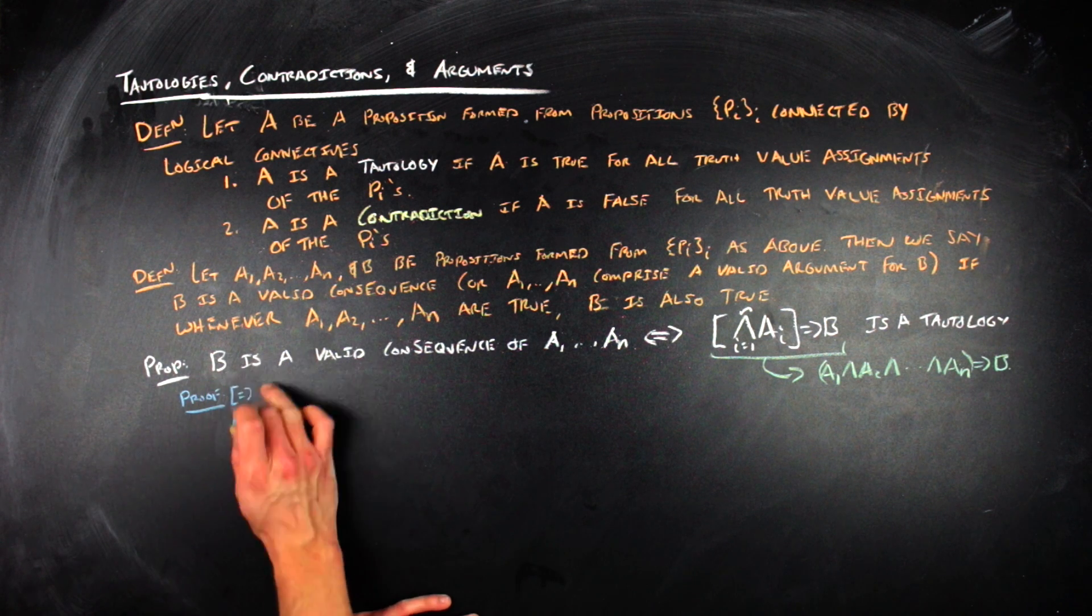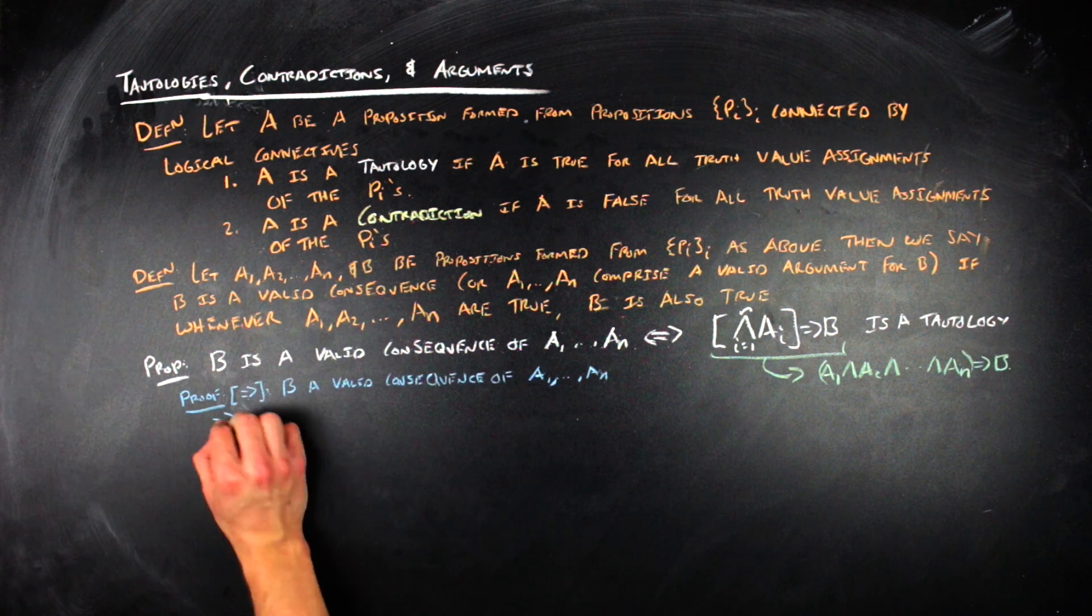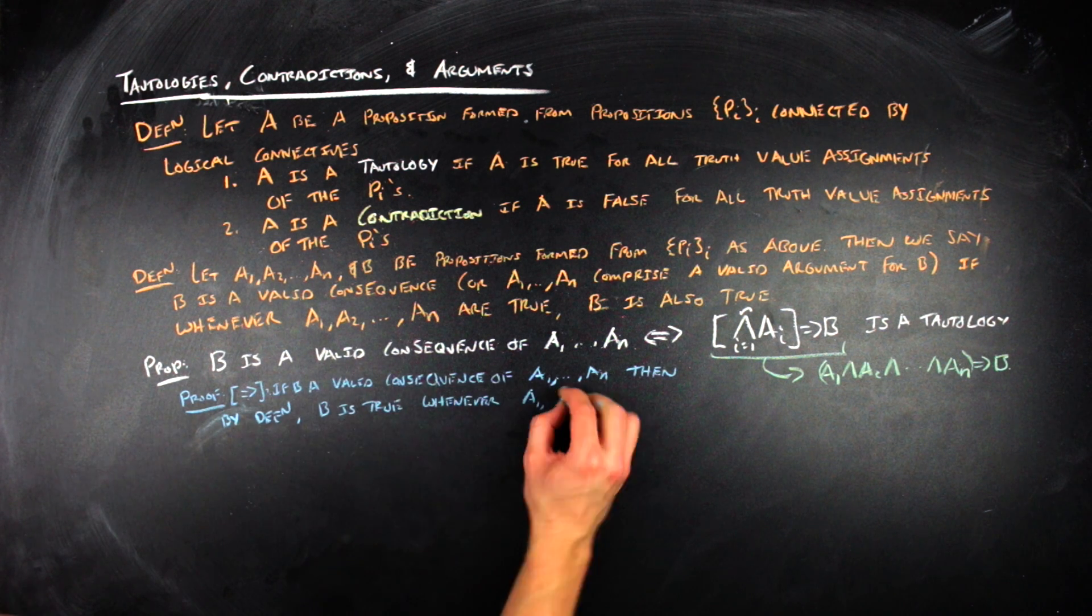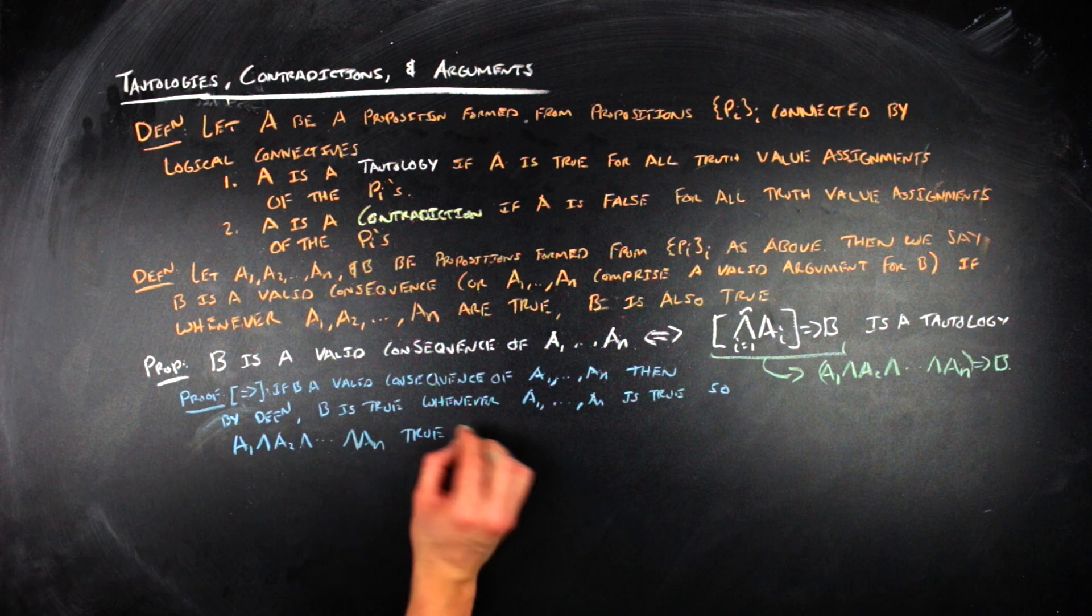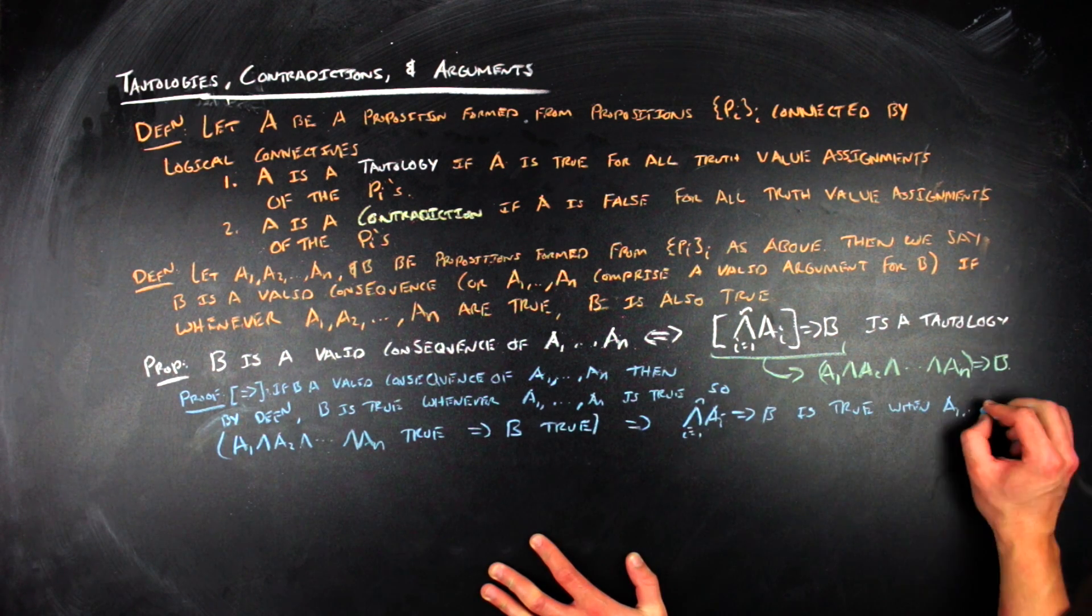One direction is quick, but I'll do the harder direction first. So going forward, assuming that B is a valid consequence of the A_1 through the A_N's. Well, if B is a valid consequence of the A_1 through A_N's, then whenever A_1 through A_N are true, B is also true. Which means that the conditional formed by ANDing together all of the A's and implying B is true, whenever the A_1 through the A_N's is true.